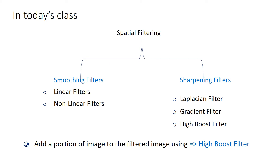The sharpened image generated by unsharp masking and Laplacian usually has the average background intensity near to blank. The reason is that sharpening is a high-pass filtering operation, so it basically eliminates the DC component — the zero-frequency background — where there is no variation in intensity values. A solution is to add a portion of the original image to the filtered image, which we do using a high boost filter.